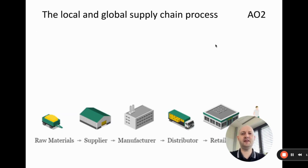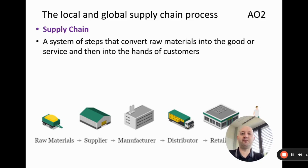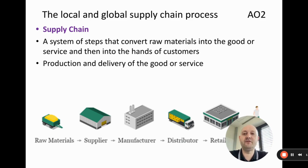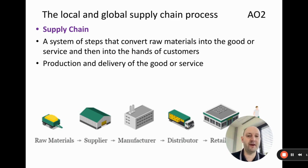So firstly let's define the local and global supply chain process. You've likely heard of the term supply chain before, so we're just going to give it a textbook definition. A supply chain is a system of steps to convert raw materials into the good or service and then into the hands of customers. This is very much about the production and delivery of the good or service.